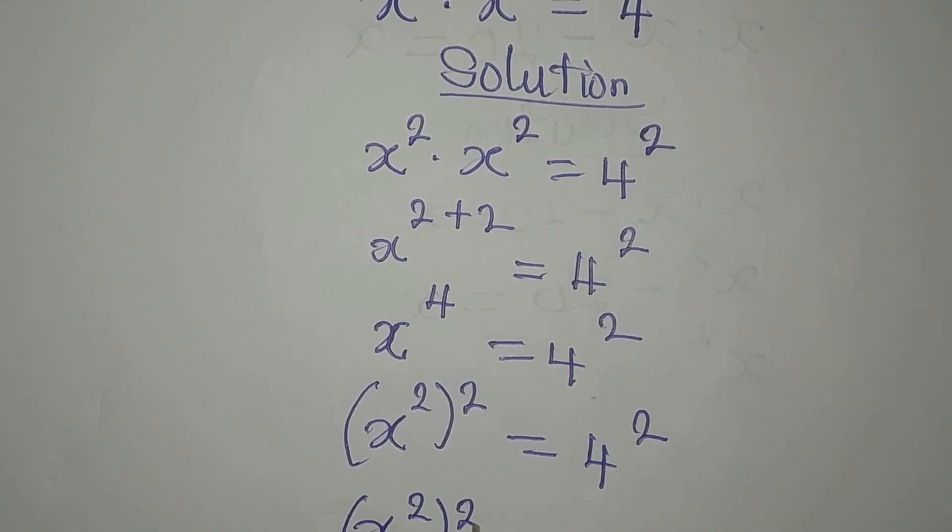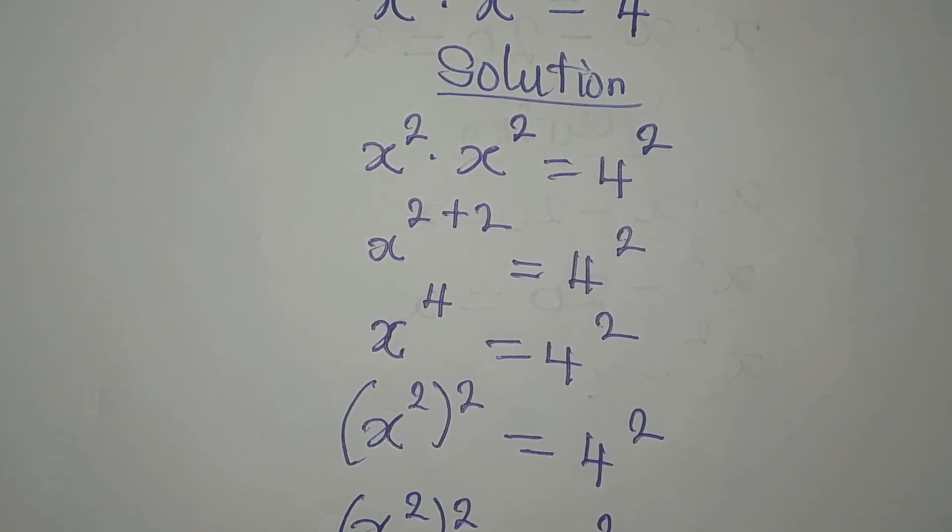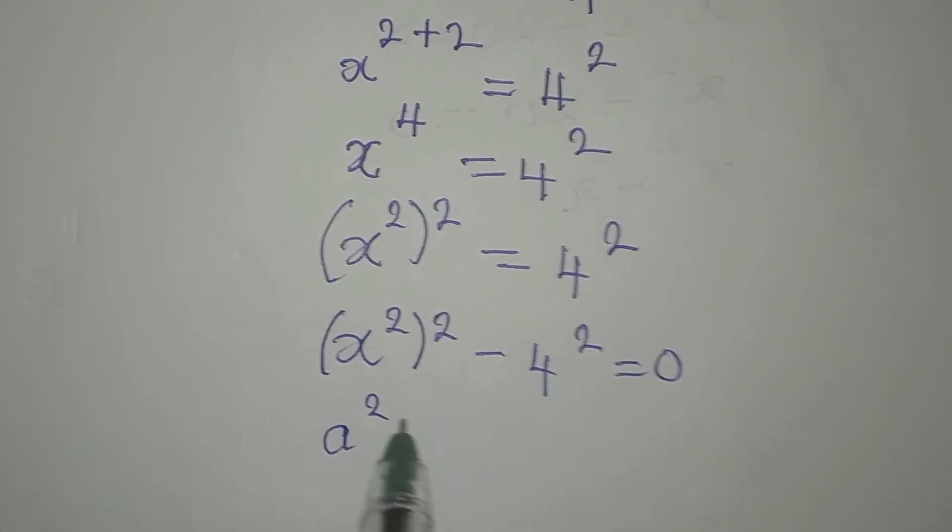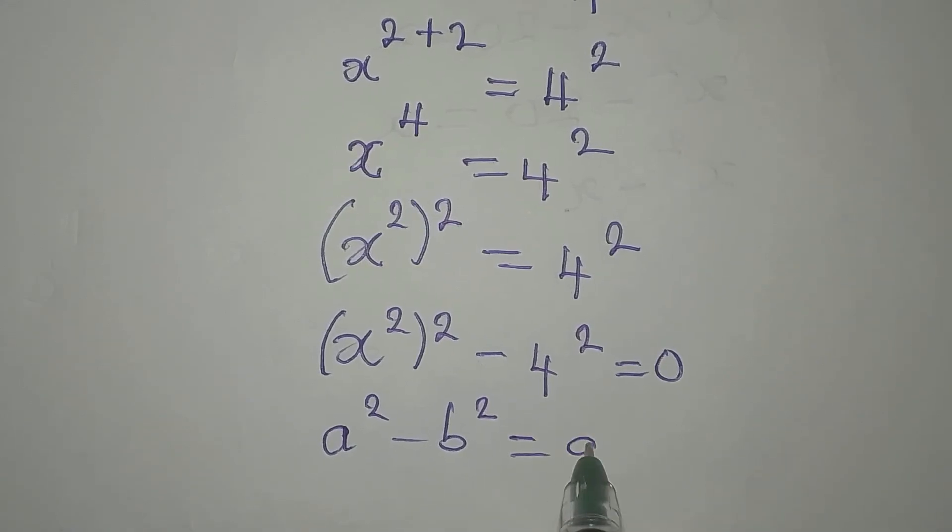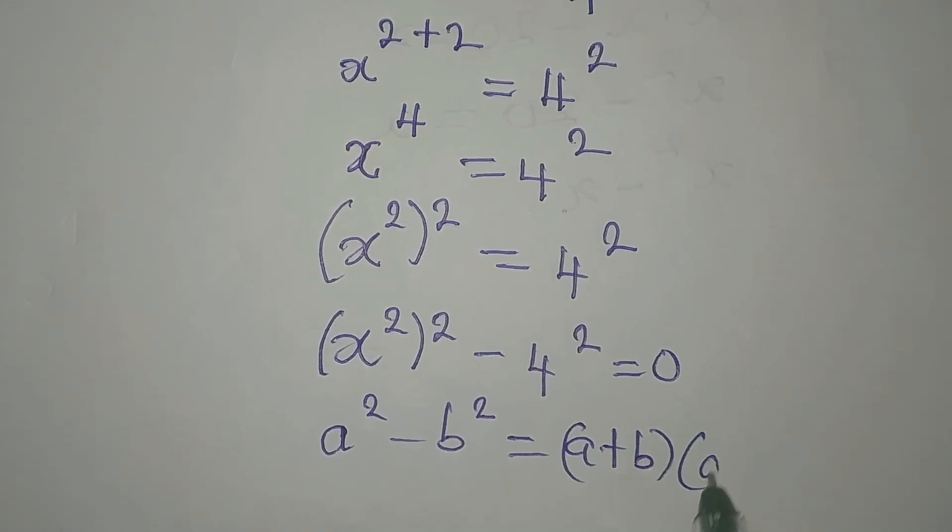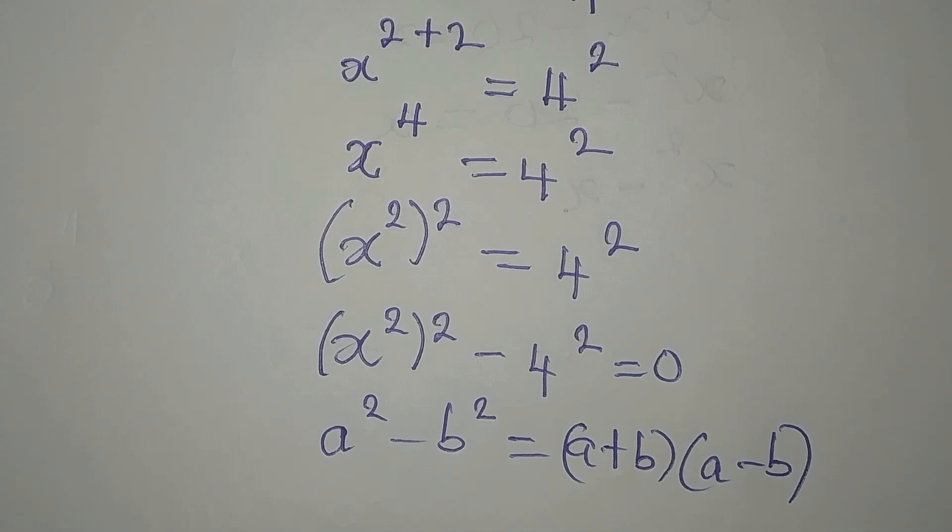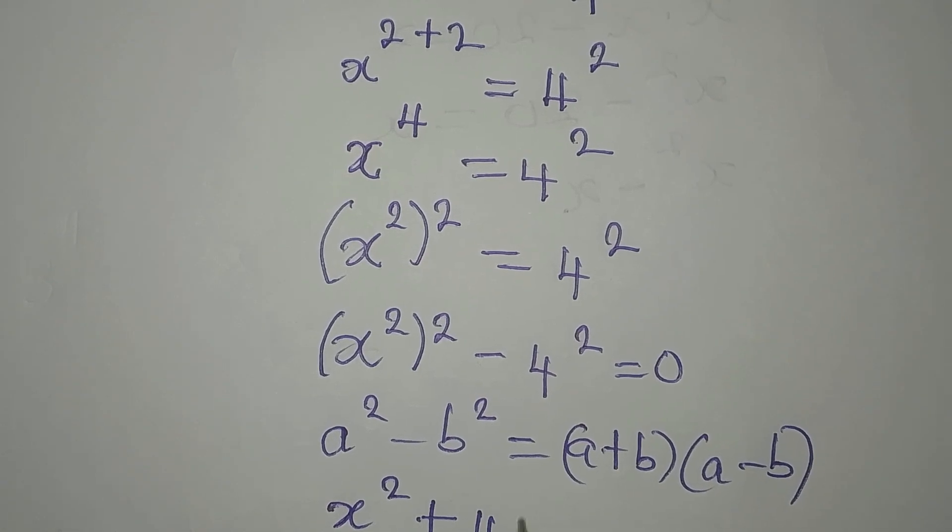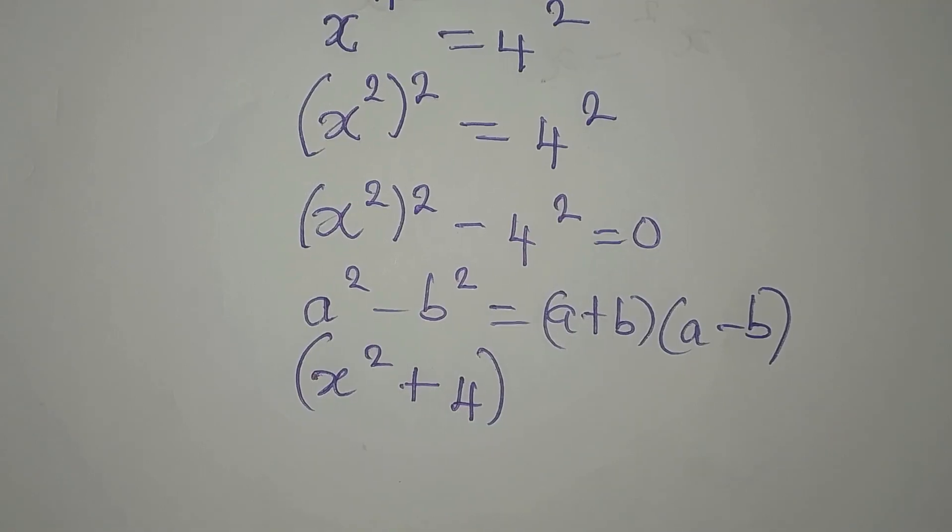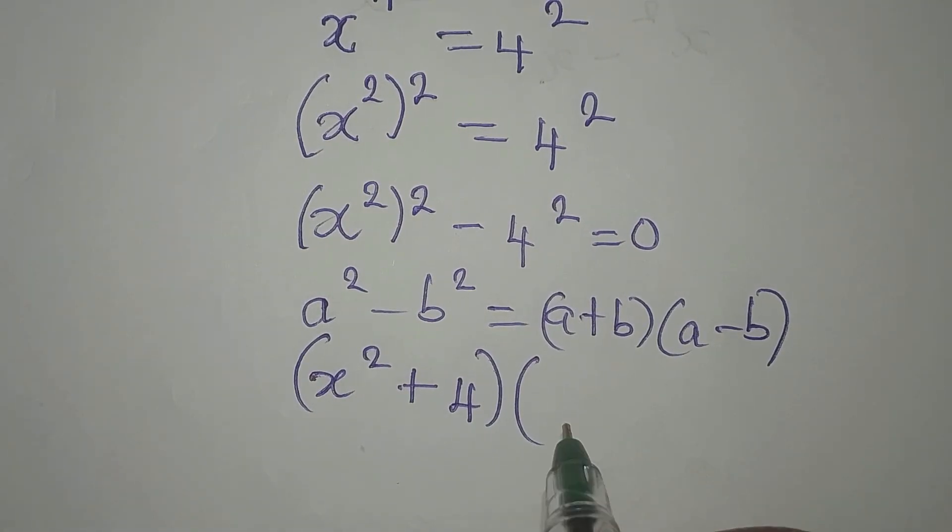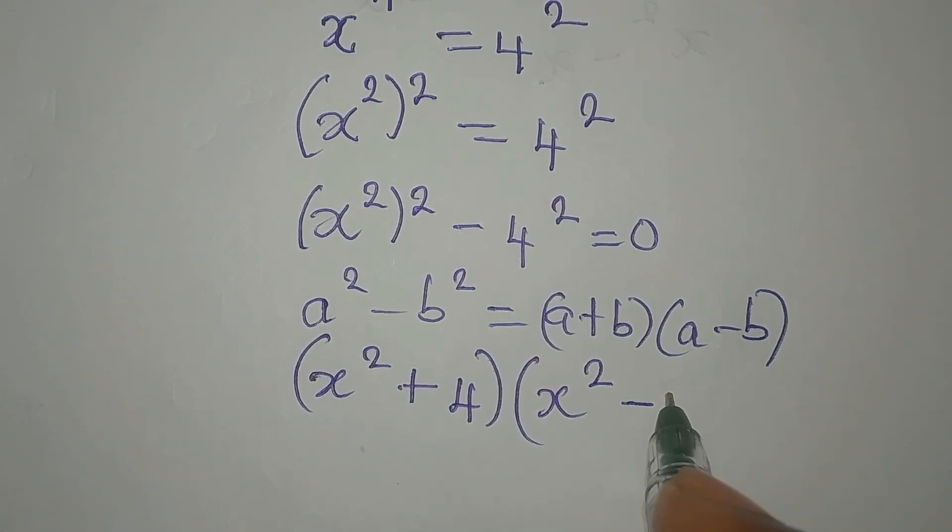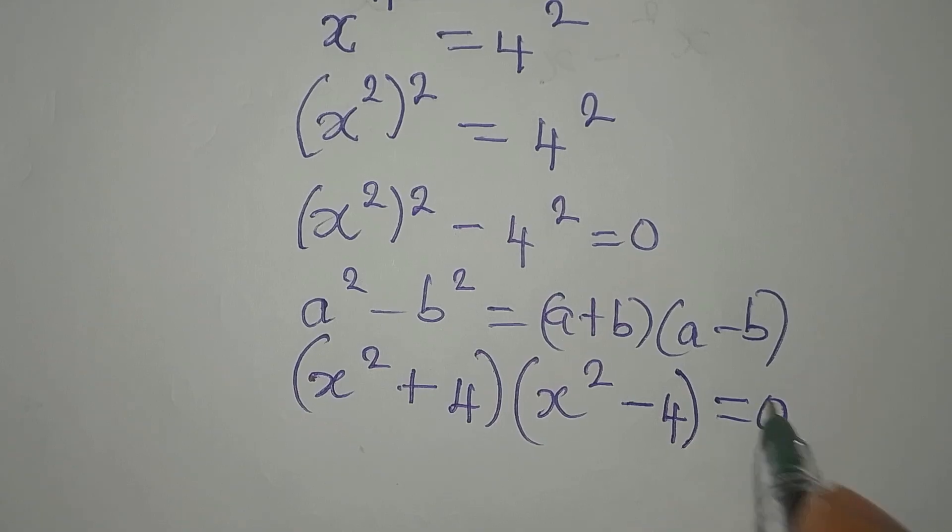Now a squared minus b squared is a plus b into a minus b. So our a is x squared, so I'll write x squared plus b. Our b is 4, then this will be in the first bracket. Then in the second bracket we have a minus b, which should be x squared minus b. Our b is 4. This is equal to 0.